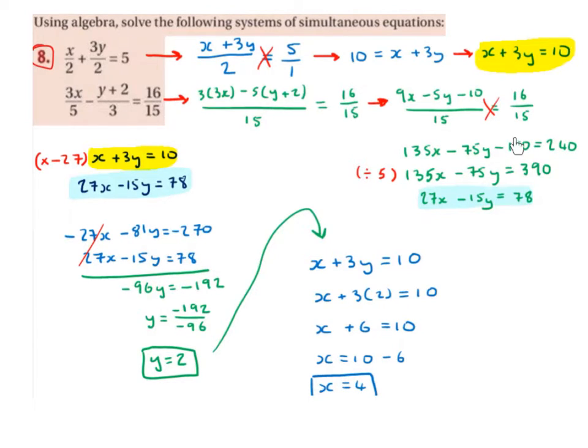So I'm going to bring minus 150 over the equal sign, it becomes plus 150, and 240 plus 150 is 390. So I have 135x minus 75y equals 390. I'm going to divide across by 5 to simplify. I get 27x minus 15y equals 78. So now I have my second equation.